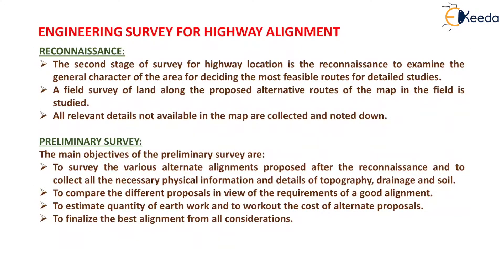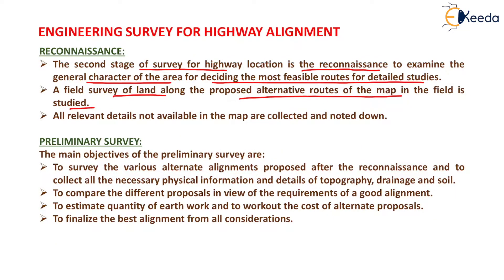The next stage is the reconnaissance survey. The second stage of survey for highway location is the reconnaissance, to examine the general character of the area for deciding the most feasible routes for detailed studies. In reconnaissance survey we visit the site for detailing features which are not available in the map. A field survey of land along the proposed alternative routes is carried out and all relevant details not available in the map are collected and noted down.